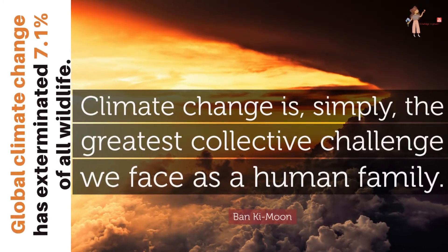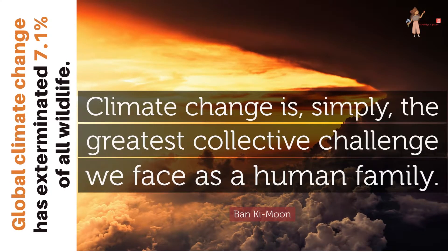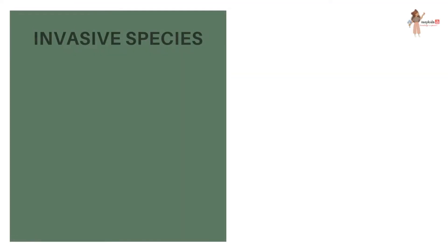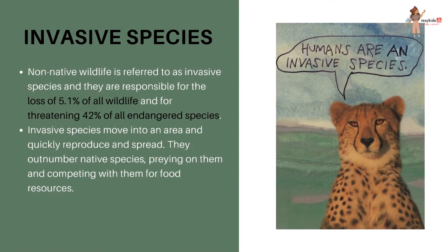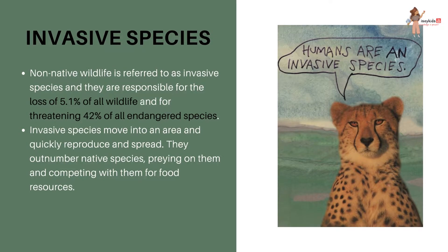Global climate change has exterminated 7% of all wildlife. Invasive species — non-native wildlife that moves into new areas due to the increased mobility of humankind — is responsible for the loss of 5% of all wildlife and for threatening 42% of all endangered species. Invasive species quickly reproduce and spread, outnumbering native species, preying on them, and competing with them for food resources.